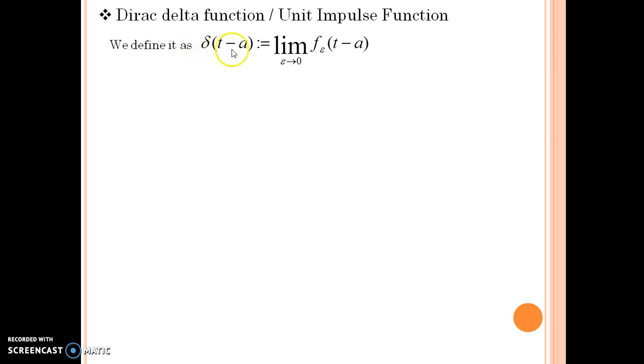Let us see the definition. It is defined in this manner. Delta(t-a) is equals to limit of f_epsilon(t-a) epsilon tending to 0. Epsilon is here is in suffix. So what is this f_epsilon function? Let us see.